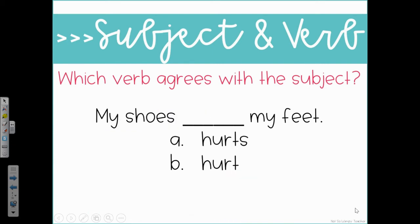Here's another example. Which verb agrees with the subject? My shoes blank my feet. What's our subject — who or what is our sentence about? My shoes is the subject. Now ask yourself, is that singular or plural? My shoes is plural, more than one shoe. So this time, we're looking for the action verb without an S. My shoes hurt my feet.